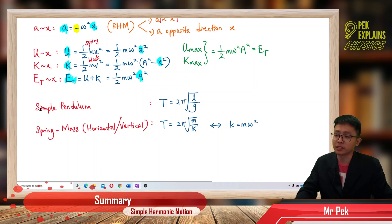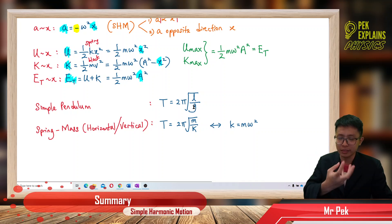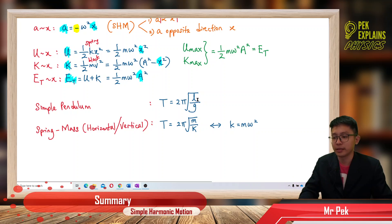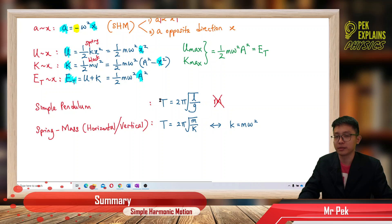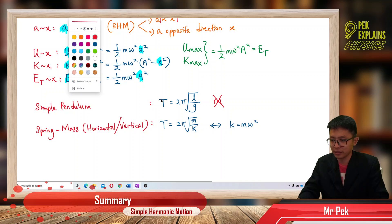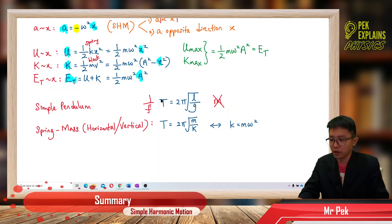For the simple pendulum, the period depends on the length of the pendulum and the gravitational acceleration — it does not depend on the mass of the pendulum. A bigger pendulum bob has the same period; mass does not affect period or frequency. Since period = 1/frequency, you can convert between them freely.